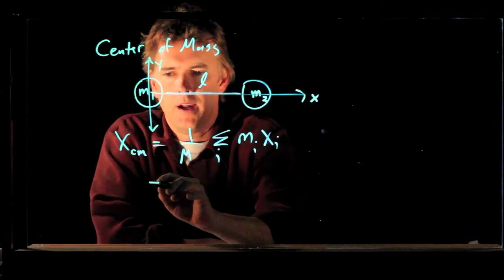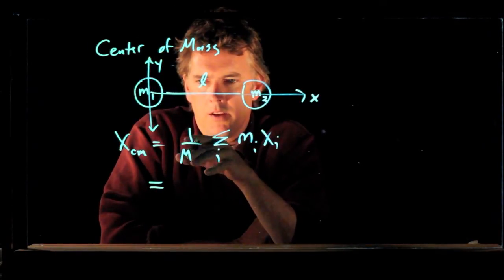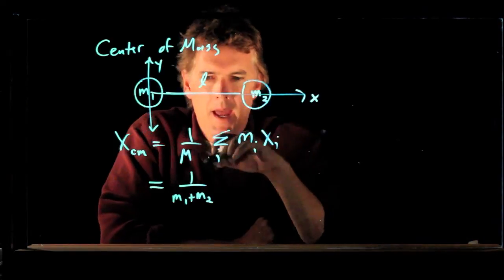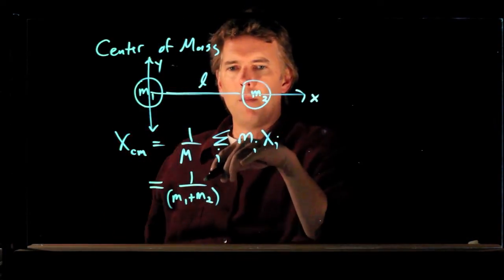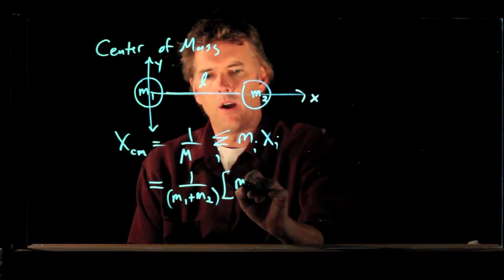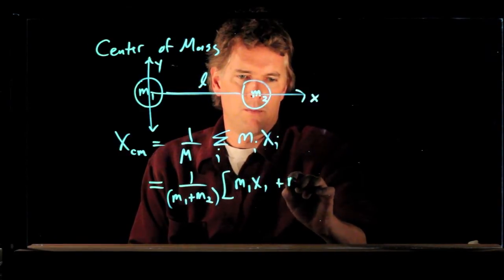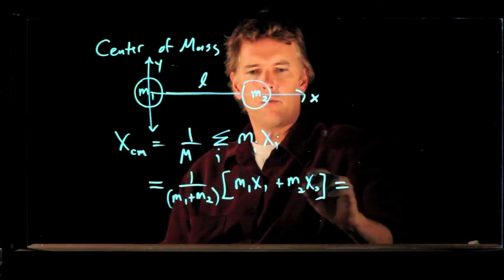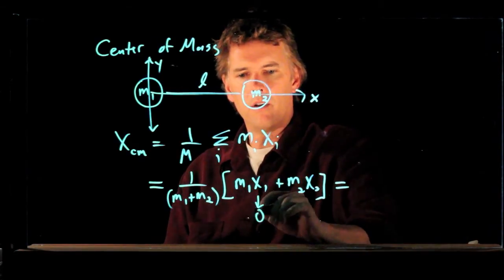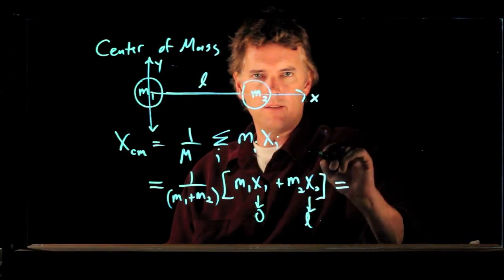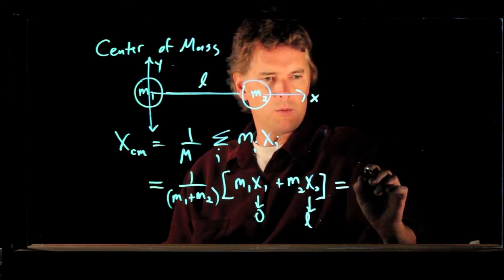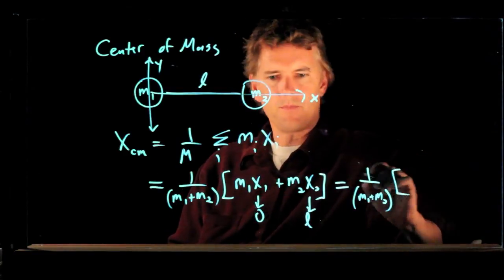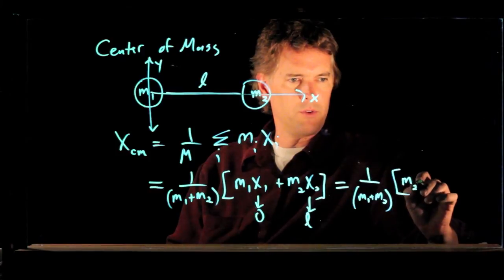How do we calculate the center of mass now? Well, it's simply this. It's 1 over the total mass. There's only two particles here, and so the total mass is m1 plus m2. And now we have a summation to deal with, but we only have two particles. We have m1 times its position x1, plus m2 times x2. And the way we drew this thing, x1 is in fact equal to 0, x2 is just equal to L. And so this whole thing, the x center of mass becomes 1 over m1 plus m2 times, that term goes away, and we just end up with m2 times L.